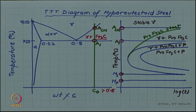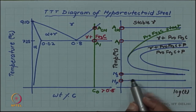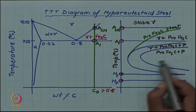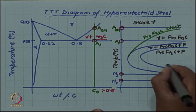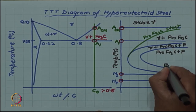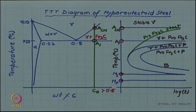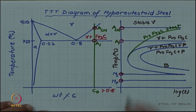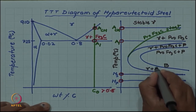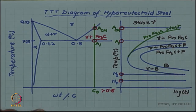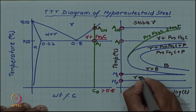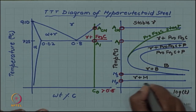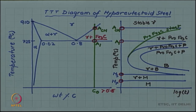Just like in the hypo-eutectoid case, if you quench below the nose there is no formation of pro-eutectoid Fe₃C — it is totally suppressed and you will get only bainite. Below Ms you get gamma plus martensite, and below Mf you get martensite. This is how the TTT diagram changes for hypo-eutectoid and hyper-eutectoid steels.